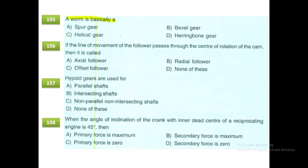If the line of movement of the follower passes through the center of rotation of the cam, then it is called a radial follower.